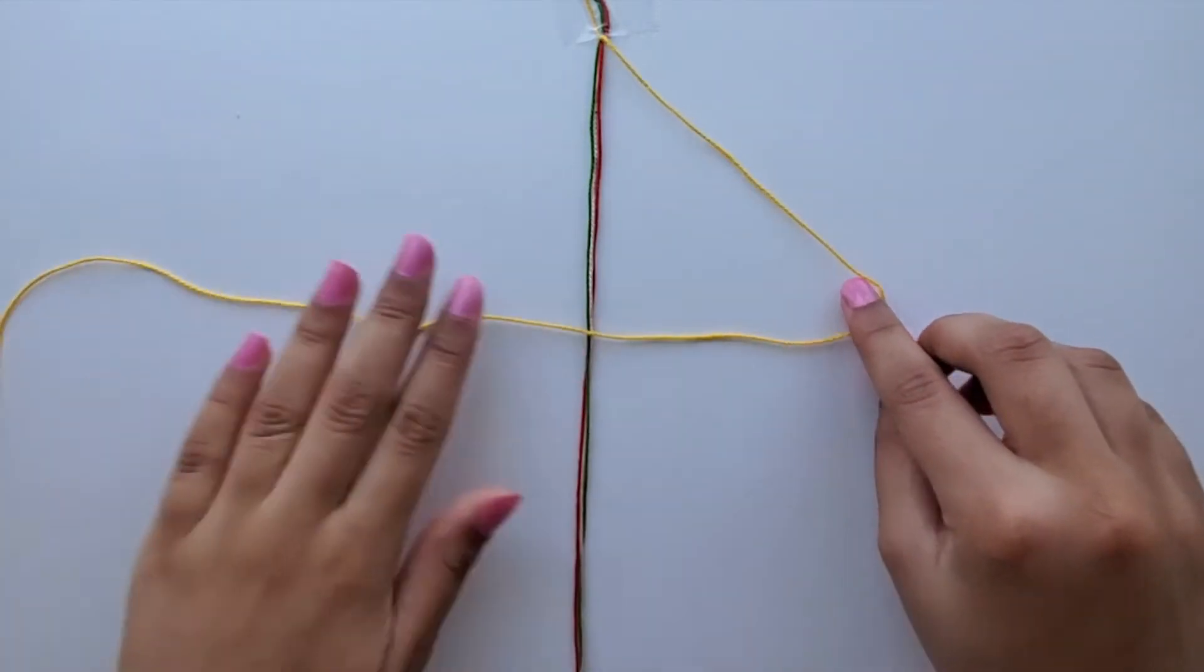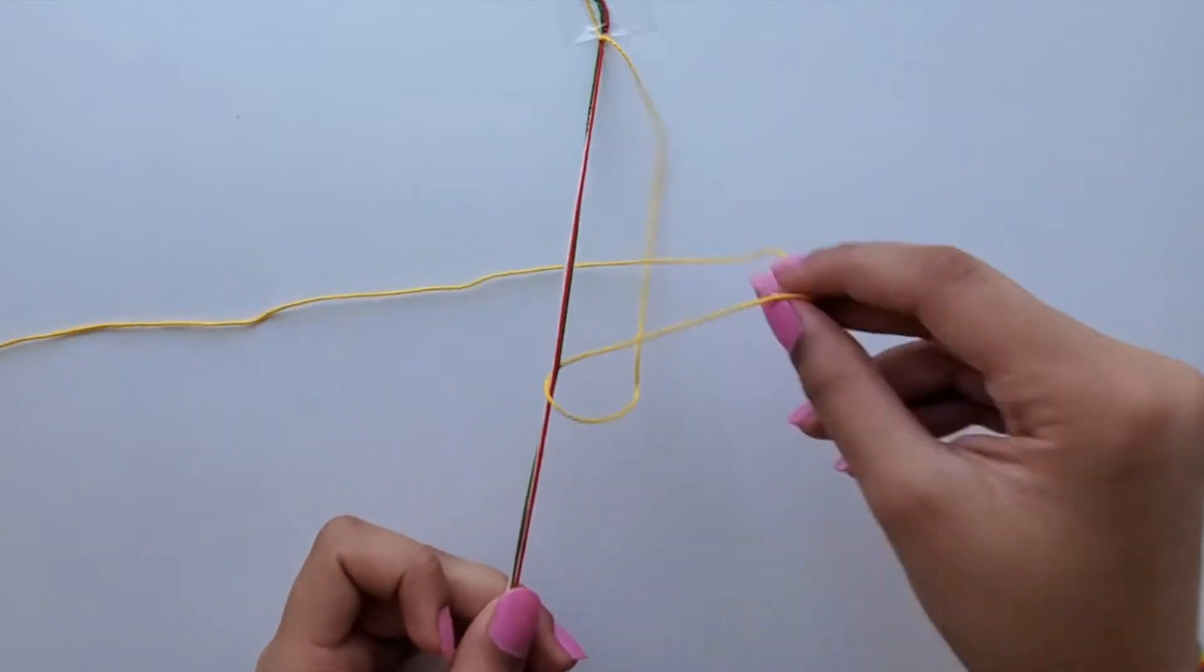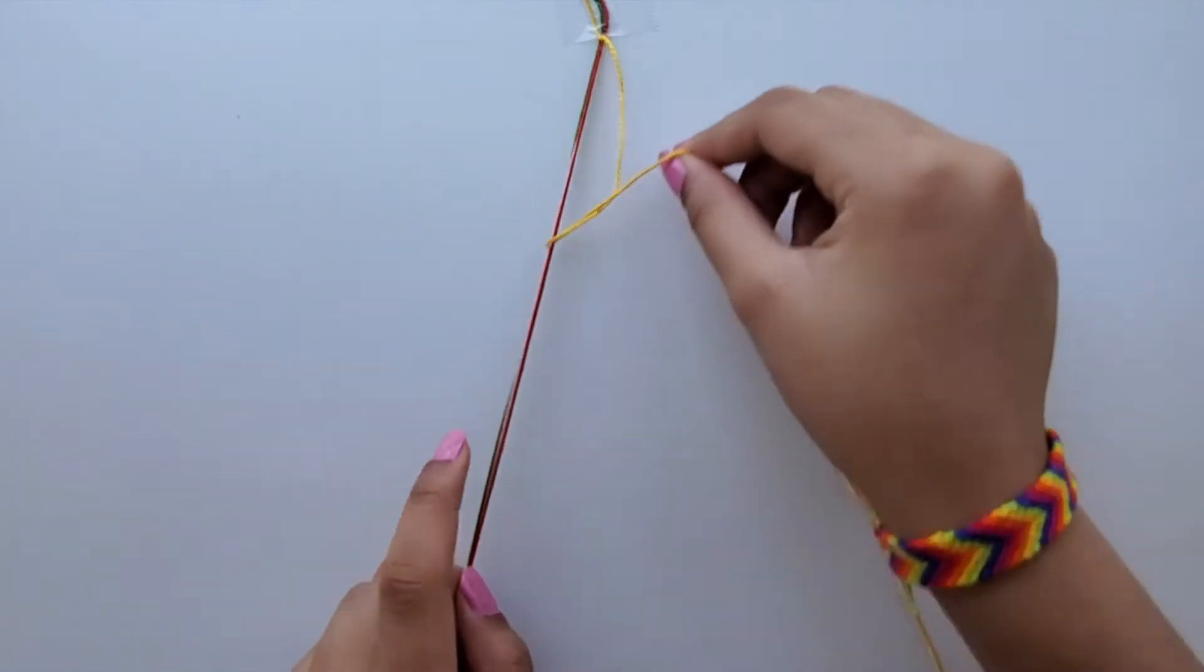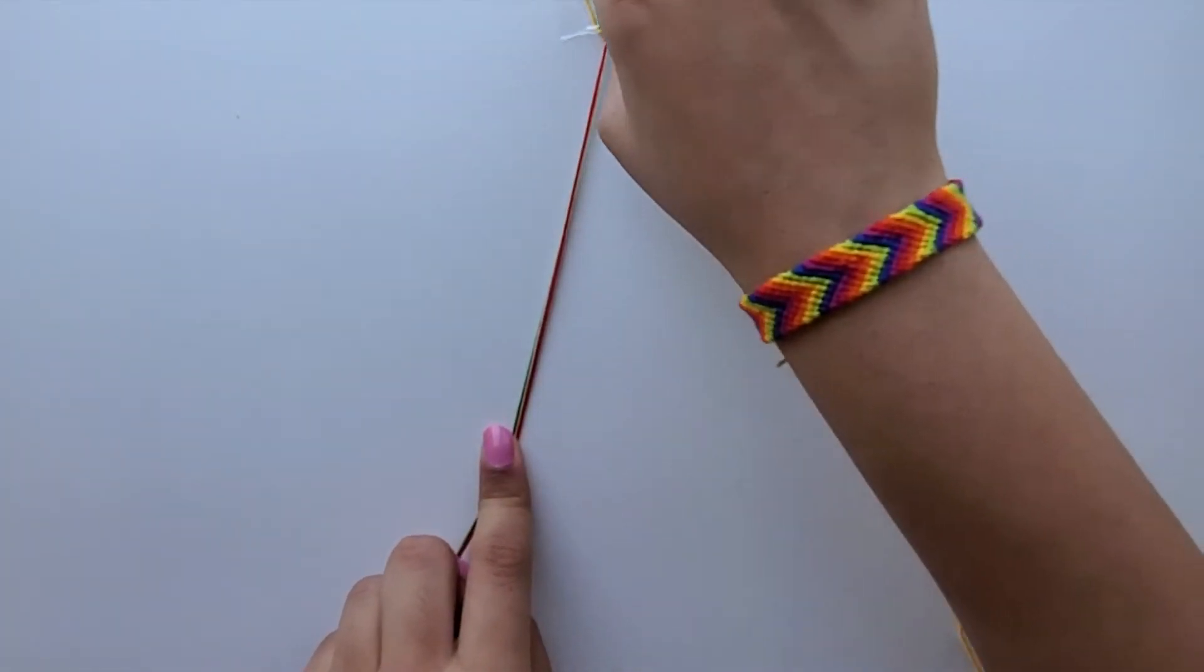Once you have made one forward knot, you are going to make a backward knot by going along the other side. Then take the end of your string and pull it through the loop again and pull up the string to the top.